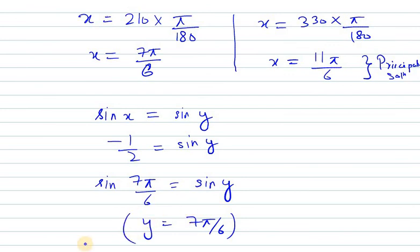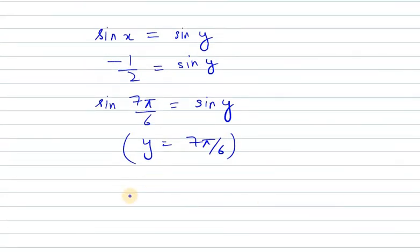Now we need to write the general solution. For general solution for sin we know is x equal n pi plus minus 1 raised to power n times y, where n belongs to z.